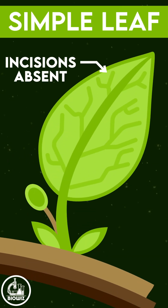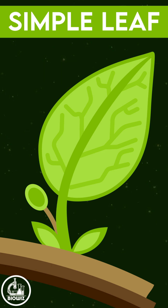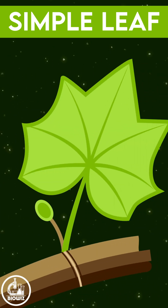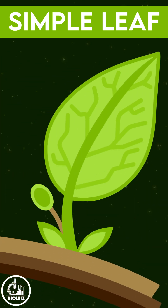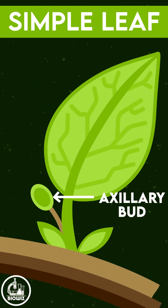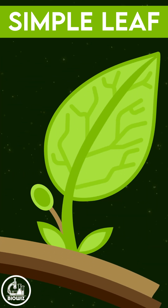The first type is the simple leaf, in which either the lamina does not have any incision, or if incisions are present, they do not reach the mid-rib. The axil of the simple leaf consists of an axillary bud at the base.